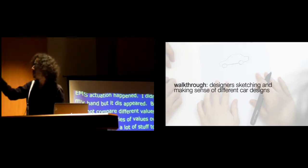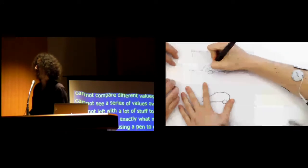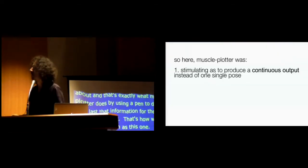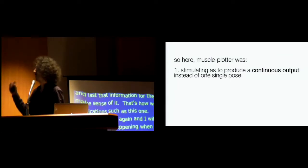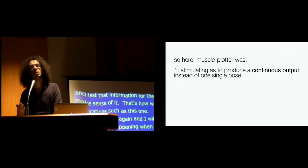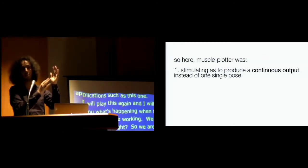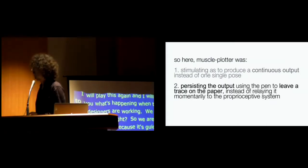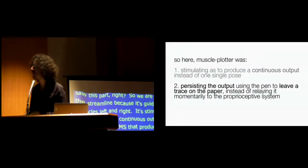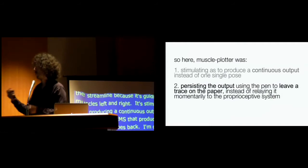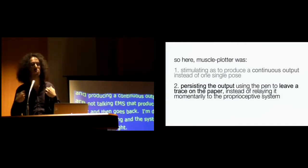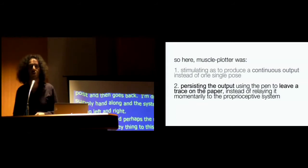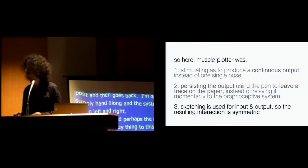What I mean is that the difference between EMS and all these other systems is while you're using something like the possessed hand or muscle-propelled, an EMS actuation happens, it moves my hand, I perceive some value, but it disappears. It lasts a few seconds, it lives in my proprioceptive system, the one that feels poses. But I cannot compare different values. I cannot see a series of values over time. So I'm not left with a lot of stuff to reason about. And that's exactly what Muscleplotter does, by using a pen to be able to digitize and last that information for the user to be able to make sense of it.